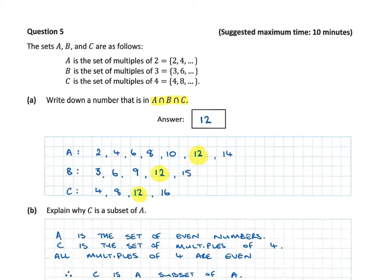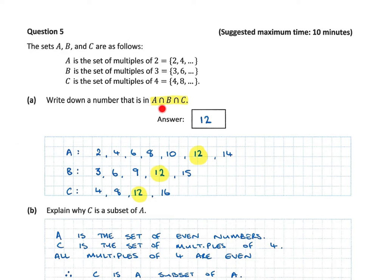We'll start with the Juniors Higher Level 2019 Paper 1, Question 5. It says the sets A, B, and C are as follows: A is the set of multiples of two — 2, 4, 6, 8, 10, 12 and so on. B is the set of multiples of three — 3, 6, 9, 12, 15 and so on. C is the multiples of four — 4, 8, 12, 16 and so on. It then says: write down a number that is in A intersect B intersect C.